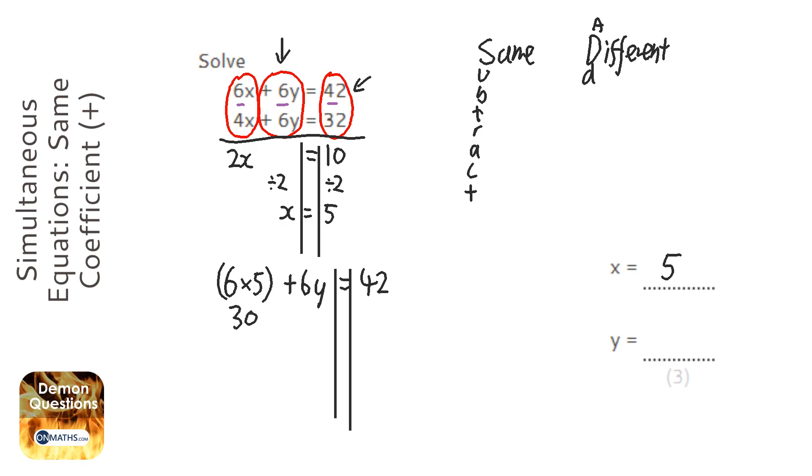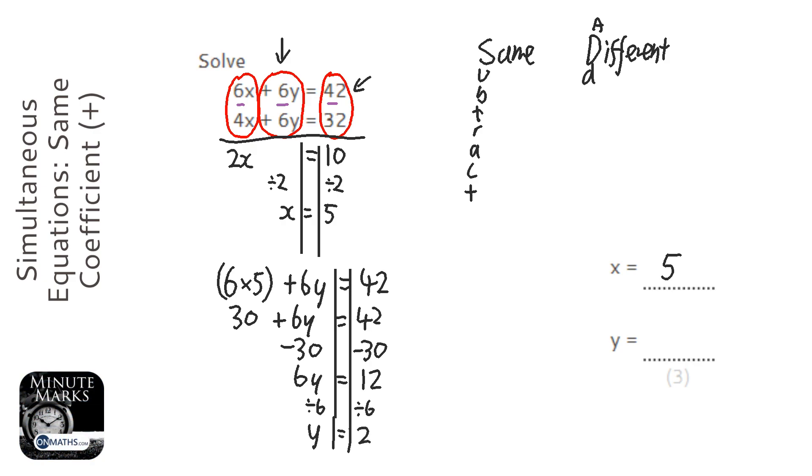So that's going to be 30 plus 6y equals 42. I'm going to take away the 30 from both sides, so 6y equals 12. Divide both sides by 6, and y equals 2.